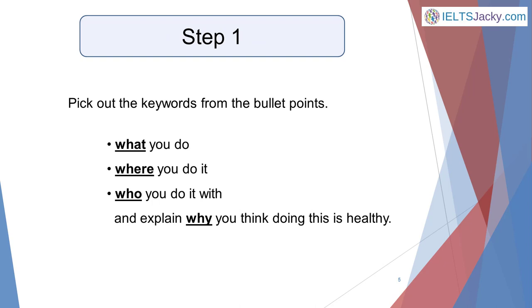First, pick out the keywords from the bullet points. I've highlighted them for you here. They are: What, Where, Who, and Why.